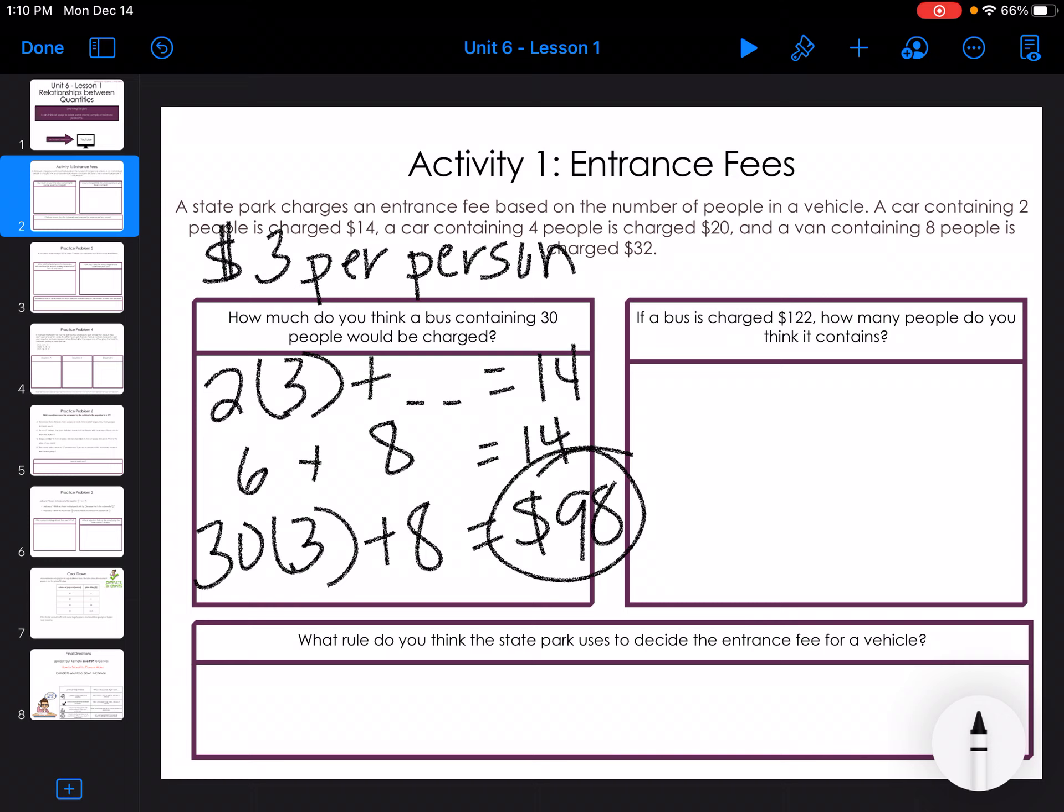So if a bus is charged $122, I have two times something, don't know what it is, and I'm adding eight for the bus and that equals 122. So I need to think, what would I plug in there? Well, I know it's got to be more than 30. So let me guess 40.